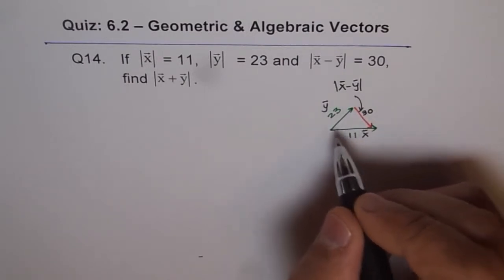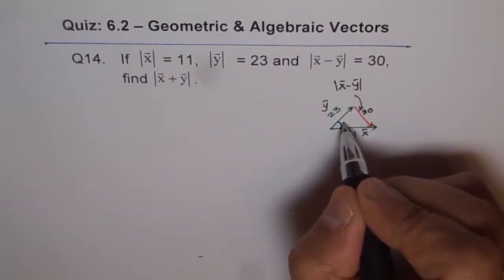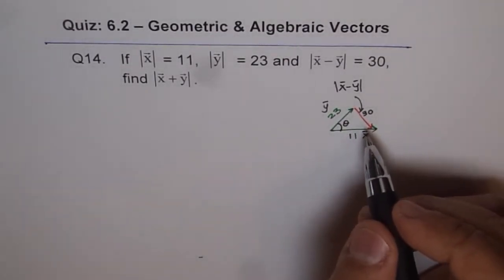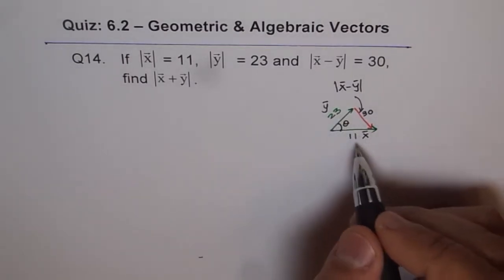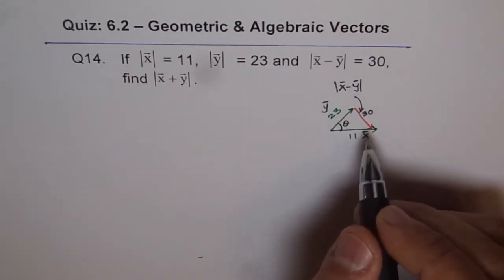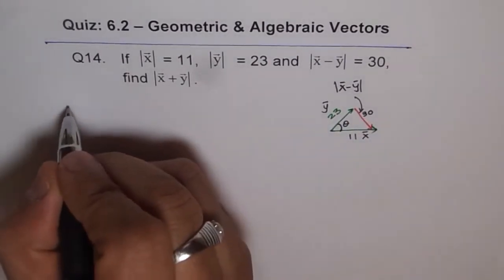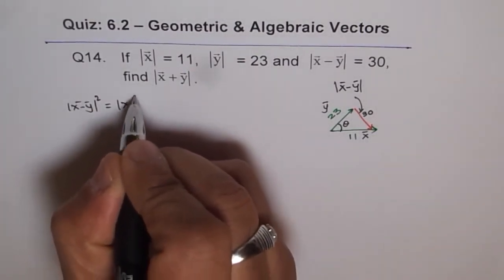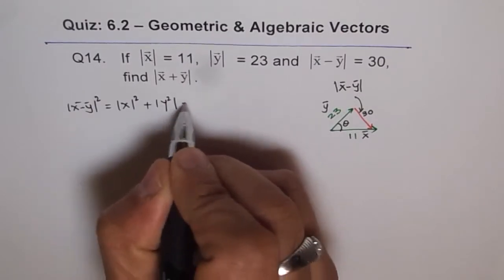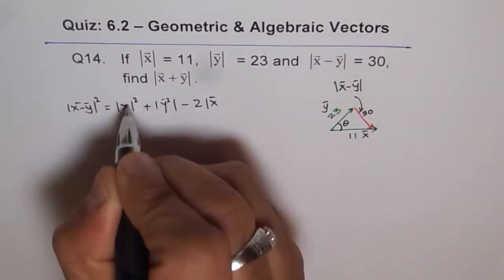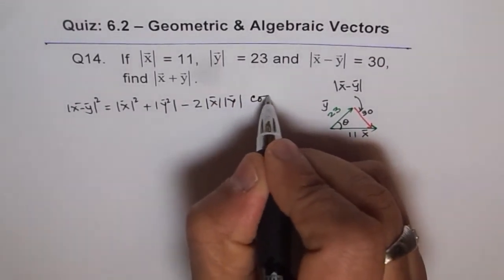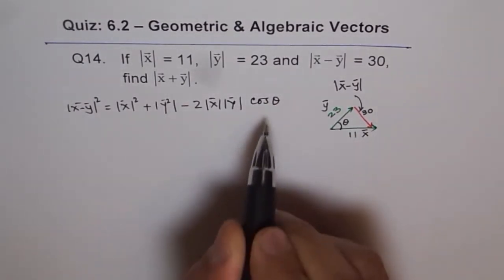So we can use the cosine law and find the angle. Let's say this angle is theta. We can find this angle using cosine law. So we know: 30 squared equals 23 squared plus 11 squared minus 2ab cosθ. We can write this as |x minus y|² equals |x|² plus |y|² minus 2|x||y|cosθ. That's the cosine law, and from here we can find what cosθ equals.